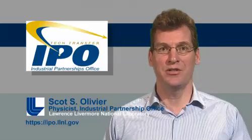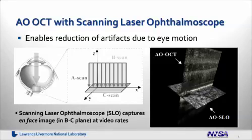A further invention here has been the combination of scanning laser ophthalmoscopy with adaptive optics optical coherence tomography. This enables the reduction of artifacts due to eye motion by taking high-resolution motion video at video rates of the back of the eye using a fast-scanning laser ophthalmoscope, combined with the adaptive optics optical coherence tomography imagery, which is taken at slower rates — typically several seconds to create a three-dimensional image. These combined techniques use fast motion video to capture any eye motions, which can then be post-processed to stabilize blurring effects in the slower process of capturing the optical coherence tomography image.